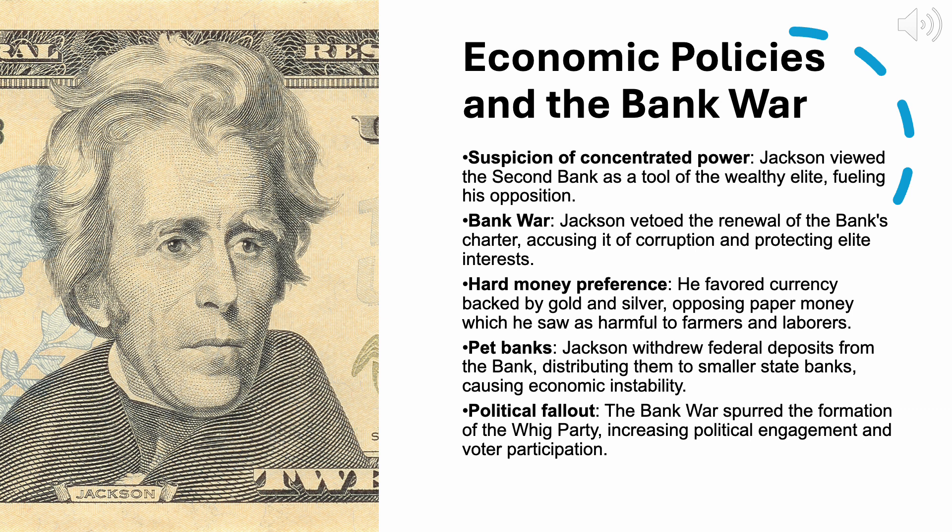In 1832, Congress passed a bill to renew the bank's charter, which was set to expire in 1836. Jackson, however, vetoed the bill, delivering a scathing message that attacked the bank's special privileges and argued that its existence was unconstitutional, despite earlier Supreme Court rulings that upheld its legitimacy. Jackson's veto message resonated with many Americans, particularly those in the South and West, who felt that the bank represented the interests of a wealthy Northeastern elite. His veto became a central issue in the 1832 presidential election, helping him secure a resounding victory against his opponent, Henry Clay.